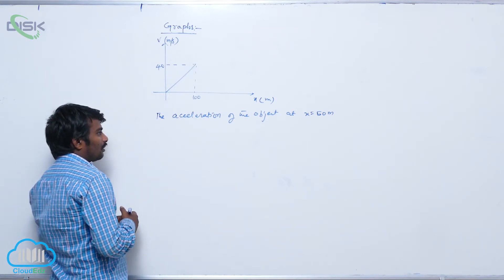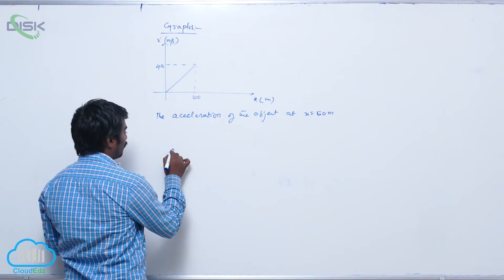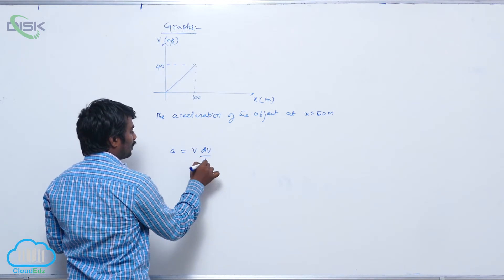Once you get the velocity as a function of x, how to calculate the acceleration? We know that a equals v dv by dx.